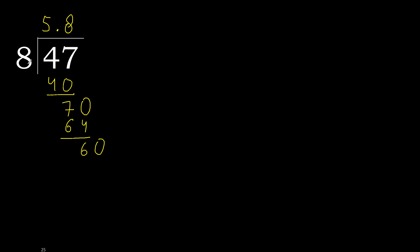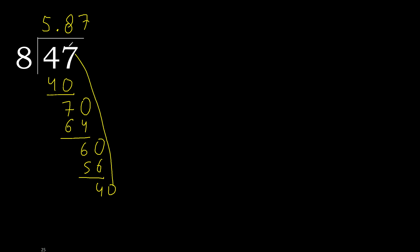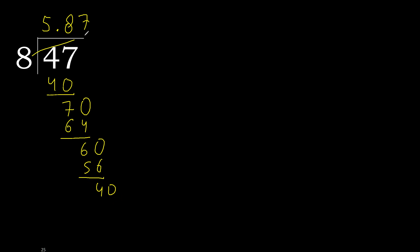8 multiplied by 7 — is not greater, subtract. Complete the point — point is here. Bring down 0 to get 40.